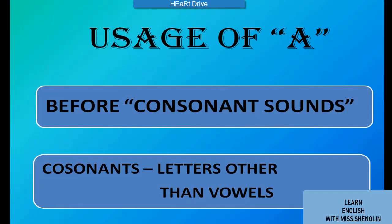Usage of 'a': before consonant sounds, we have to use the article 'a.' The consonants in the English alphabet are the letters other than vowels — B, C, D, F, G, K, L, M, N, and so on.